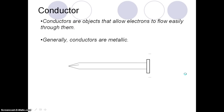If you look at your guided note sheet you'll notice that I gave you two different objects. One of them is an iron nail. The iron nail we're going to say is our conductor. Conductors are objects that allow electrons to flow easily through them. Generally, conductors are metallic.